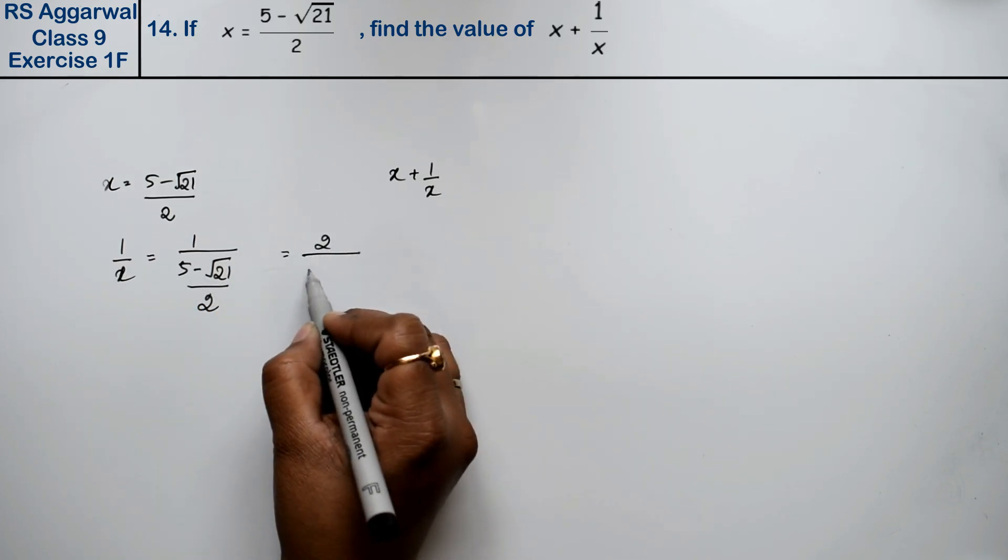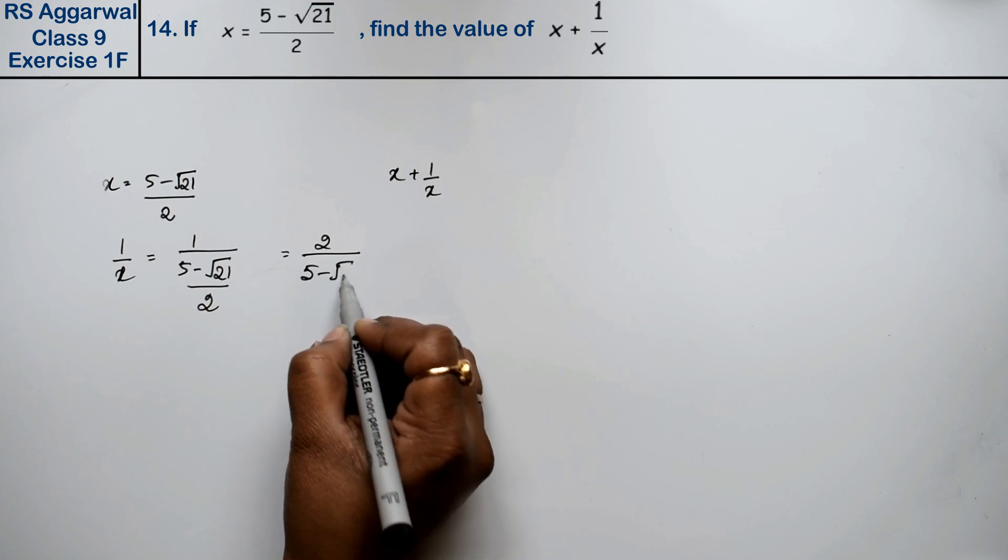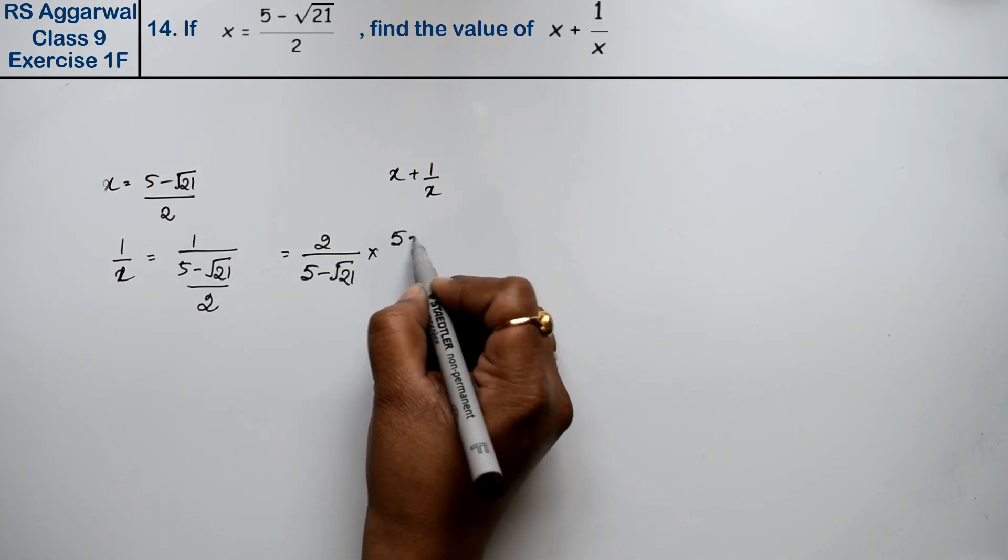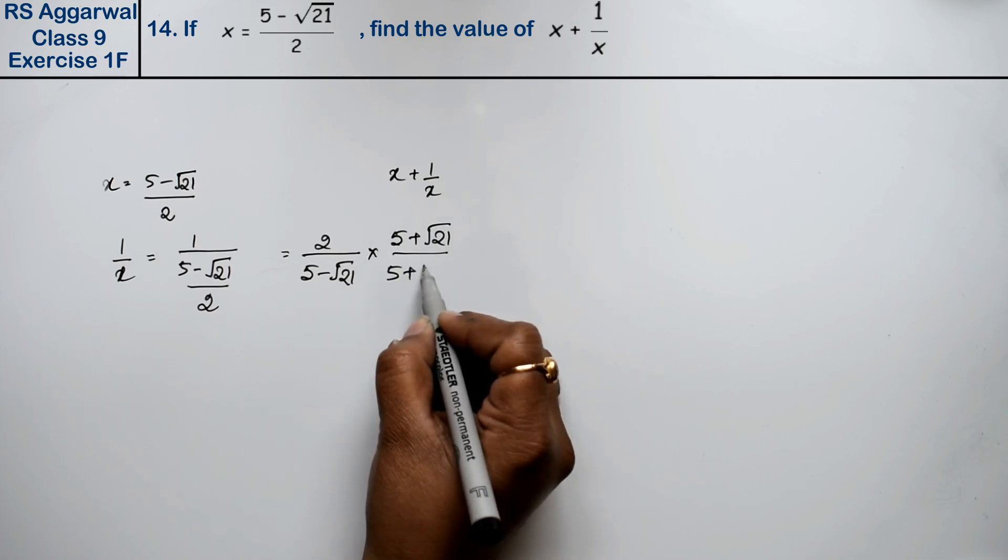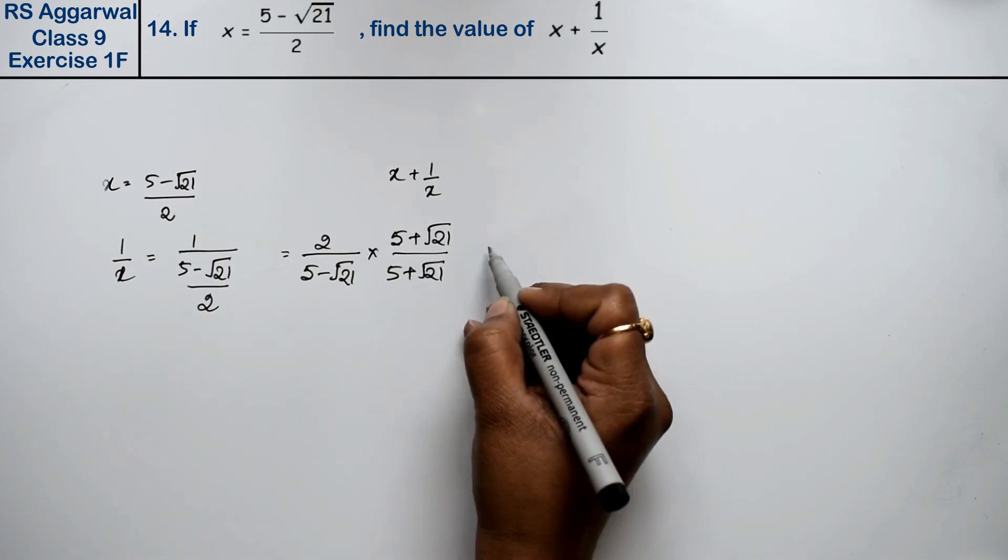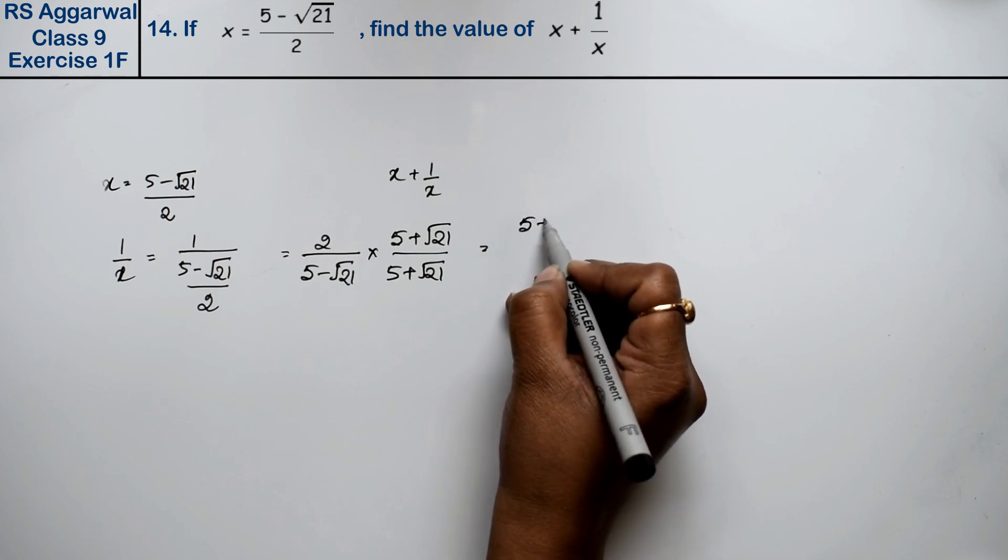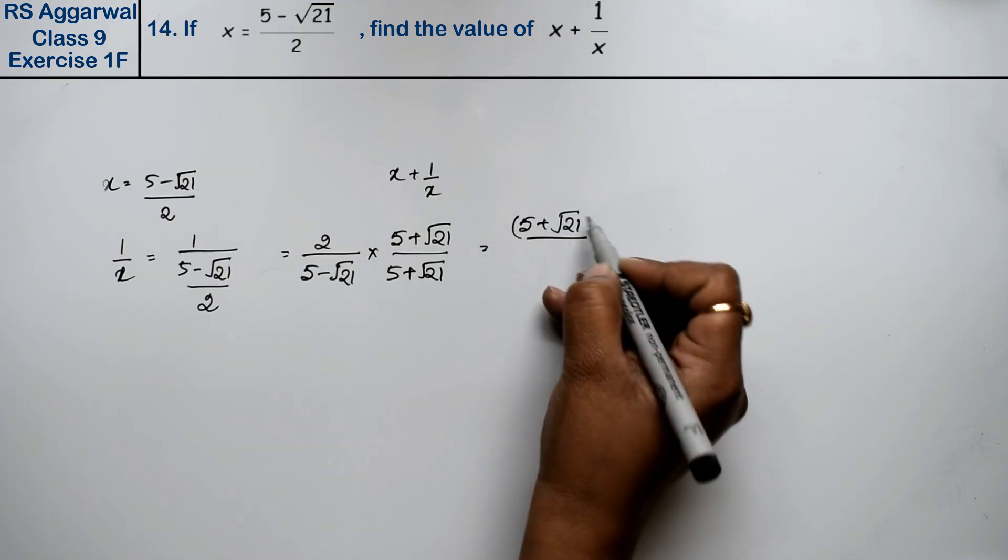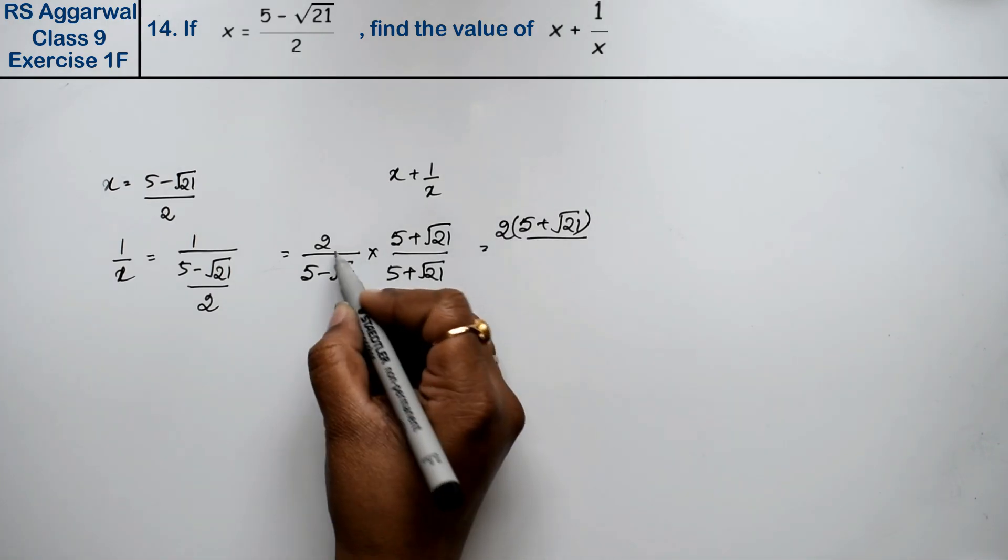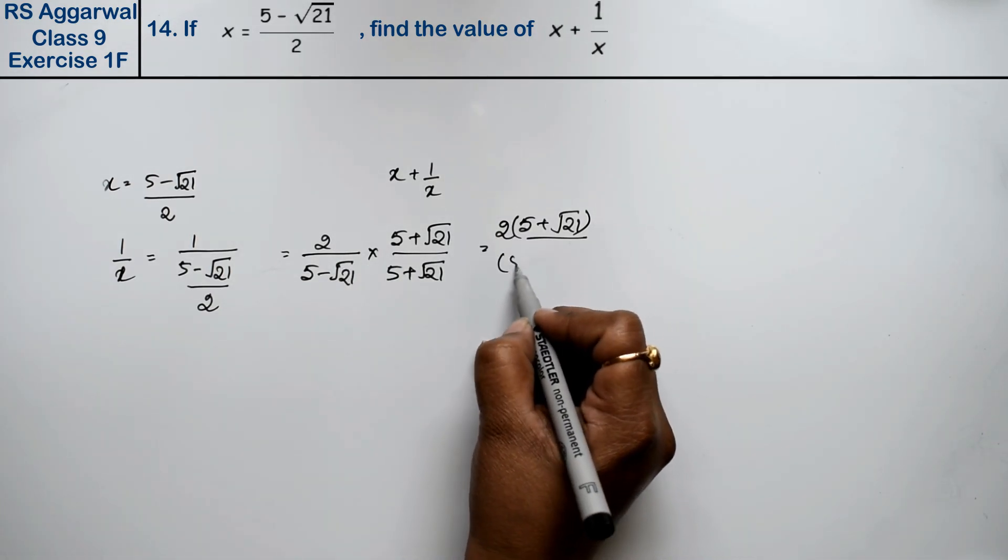Now we have 2/(5 - √21). We'll rationalize this by multiplying both numerator and denominator by (5 + √21). This gives us 2(5 + √21) divided by (5² - (√21)²).